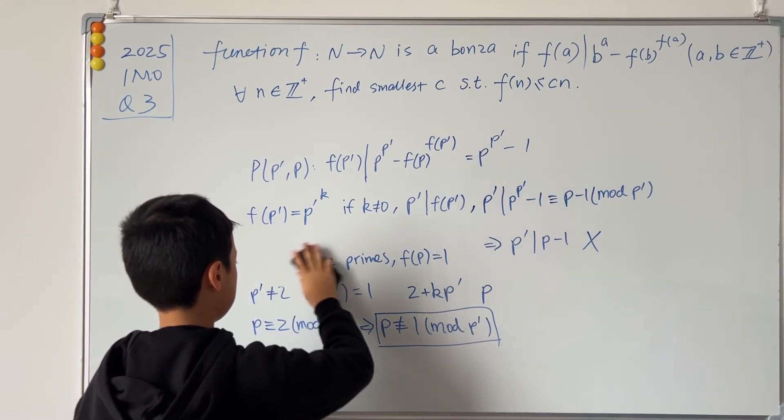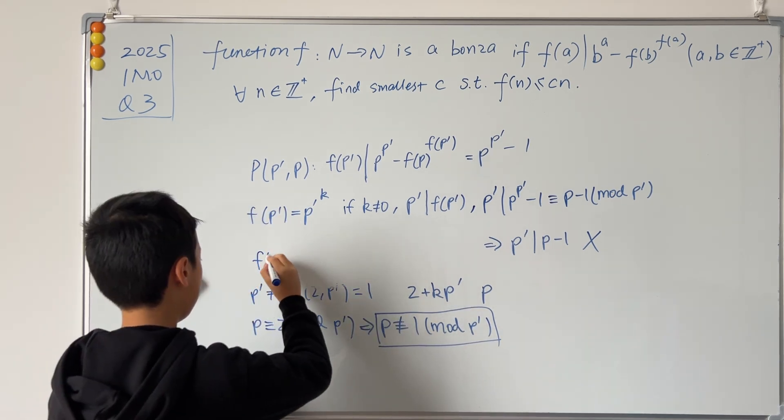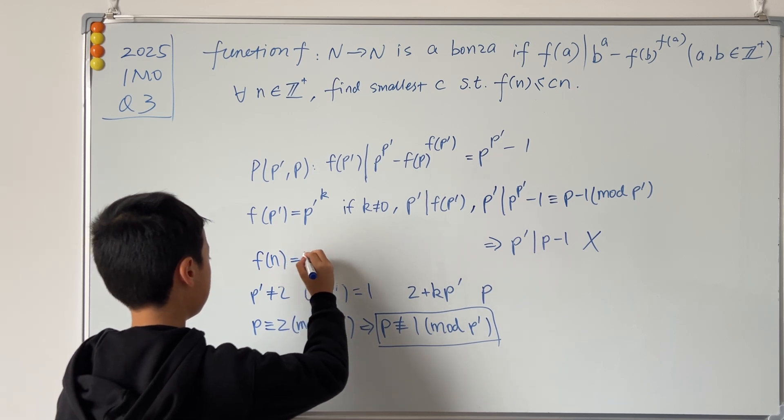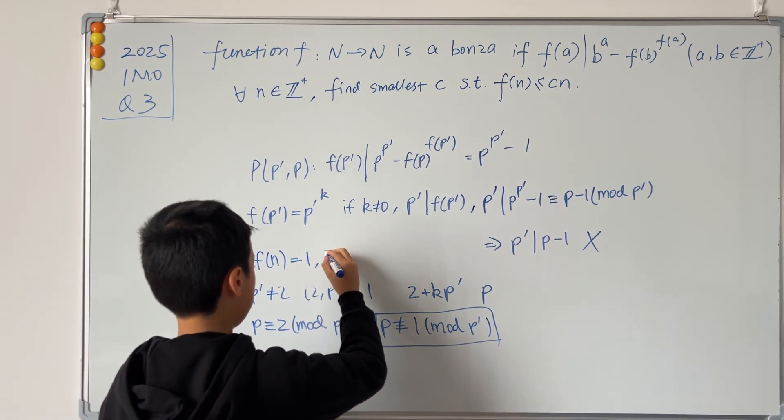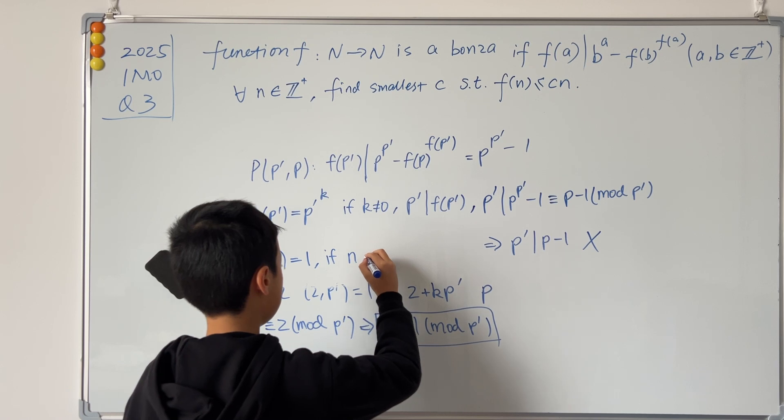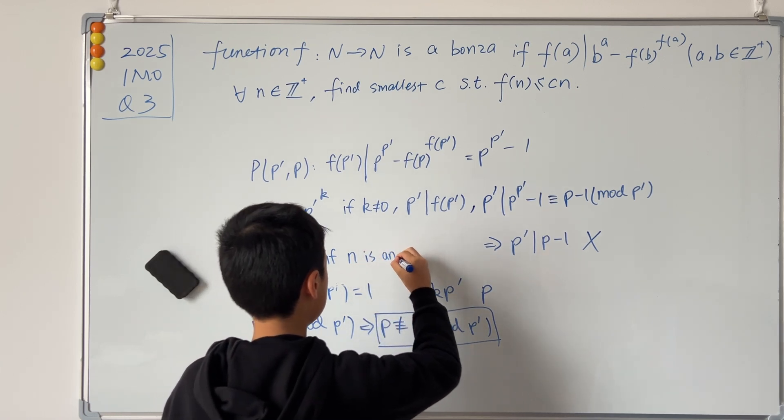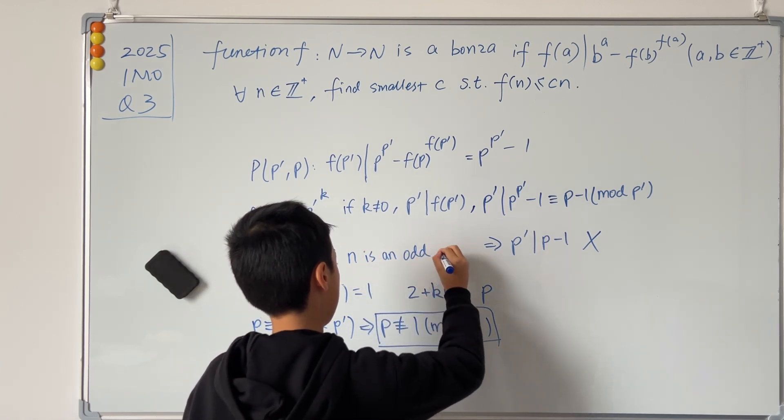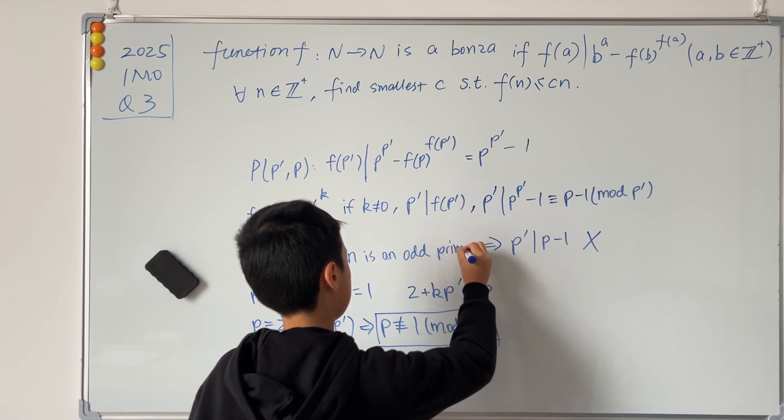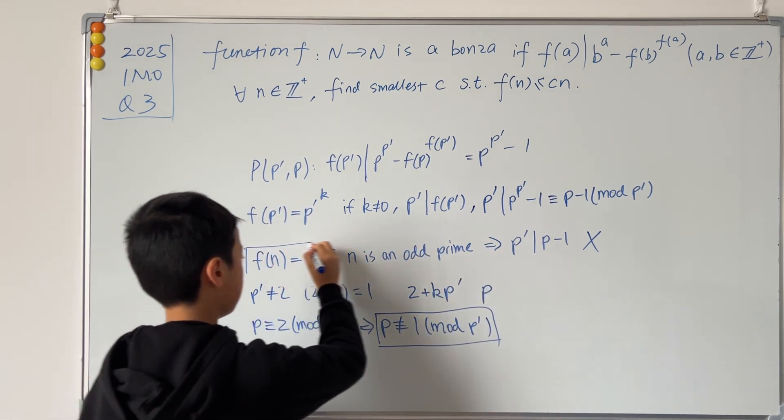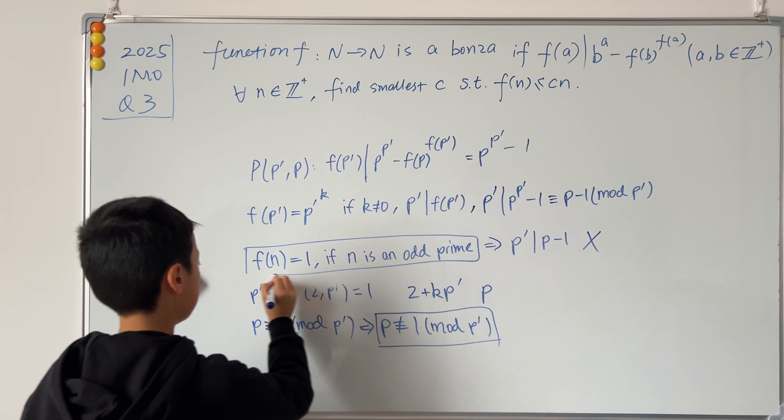So I'll just write it here. f(n) = 1 if n is an odd prime.